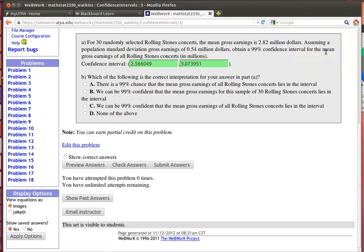Here's a problem from R. We're looking for a confidence interval, a 99% confidence interval in this case for the mean of the gross earnings from a Rolling Stones concert.